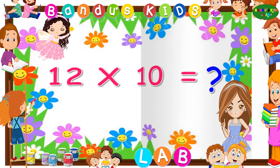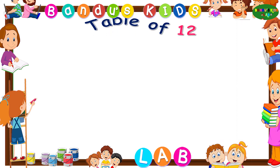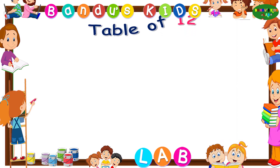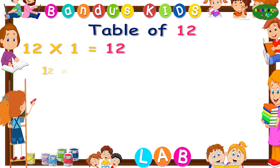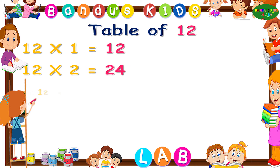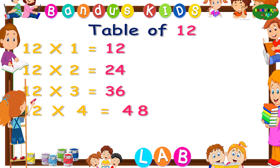Well done kids! Now let's revise the table of twelve one more time! Twelve ones are twelve, twelve twos are twenty-four, twelve threes are thirty-six, twelve fours are forty-eight.